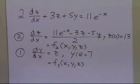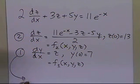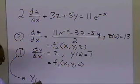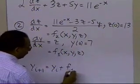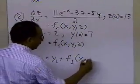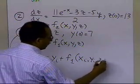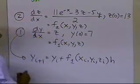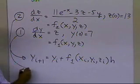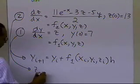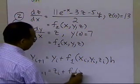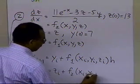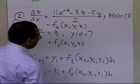Applying Euler's method: for the first equation, y_(i+1) = y_i + f1(x_i, y_i, z_i) * h. For the second equation, z_(i+1) = z_i + f2(x_i, y_i, z_i) * h. You cannot solve one without the other, because you need the corresponding value of z at each step to calculate the next value of y.